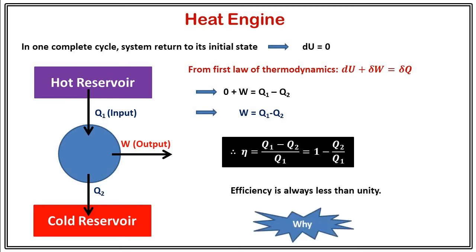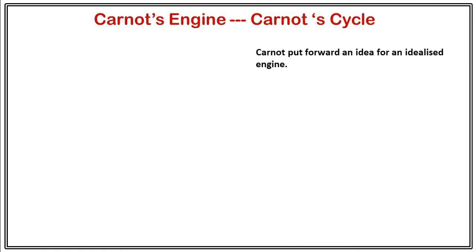Whether this is due to irreversible processes or something else? To solve this ambiguity, Carnot put forward an idea for an idealized engine and assumed all processes to be reversible. The Carnot engine is based on the Carnot cycle, and this cycle consists of four stages.